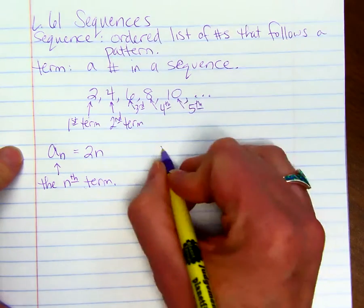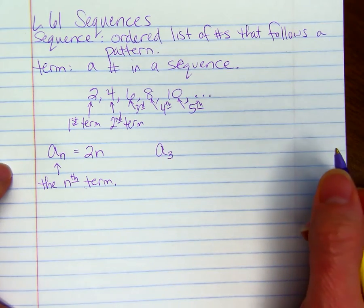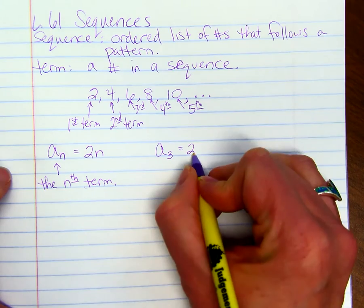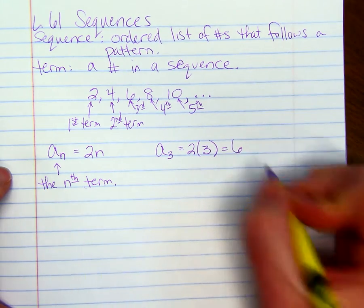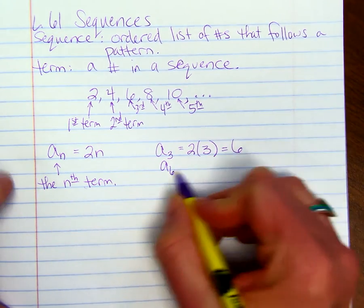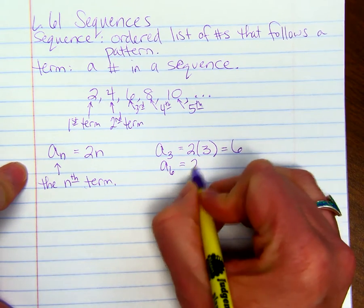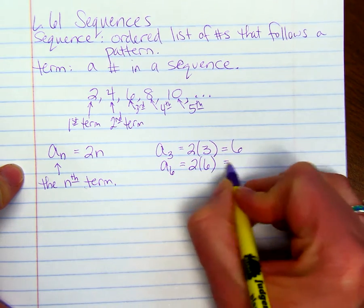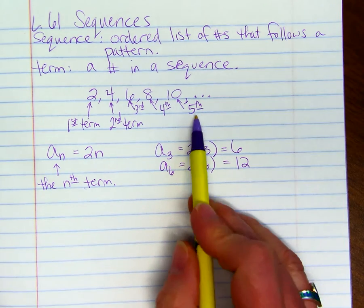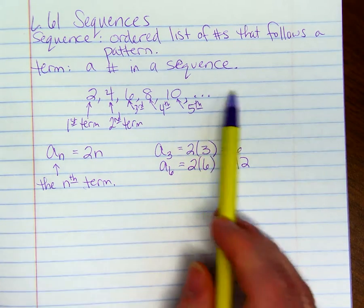If I wanted to find a sub 3, I'm just going to do 2 times 3 to get 6. The sixth term, a sub 6, I'll do 2 times 6, and it will be 12. So if I wanted the next term up here, I would get 12.